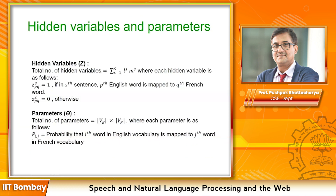Now we introduce hidden variable Z_SPQ. Z_SPQ equals one if in the S-th sentence the P-th English word is mapped to the Q-th French word, and Z_SPQ equals zero otherwise. We introduce hidden variable Z to capture the correspondence in a parallel sentence pair. We are interested in the English dictionary, the French dictionary, and the probability of correspondence between English and French dictionary words. The total number of parameters is |VE| × |VF|, where PIJ is the probability that the I-th word in the English dictionary is mapped to the J-th word in the French vocabulary.